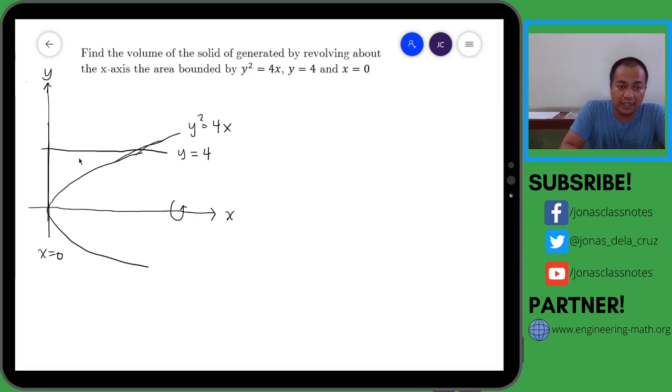So this one, if we draw the rectangular element here and if you revolve this rectangular element about the x-axis, the solid formed is actually a washer. Okay, the outer radius of the washer is this one, that is the outer radius, the capital letter R, and this is the inner radius, the small letter r.